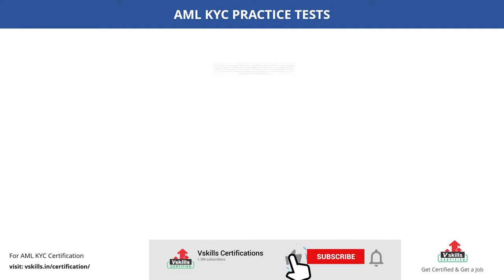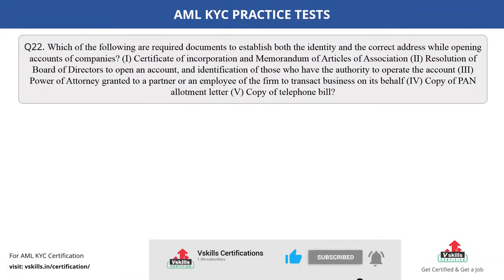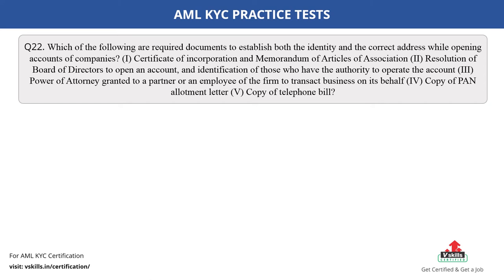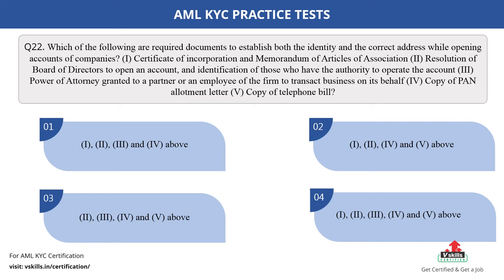Question number 22. Which of the following are required documents to establish both the identity and the correct address while opening accounts of companies? 1. Certificate of incorporation and memorandum of articles of association; 2. Resolution of board of directors to open an account and identification of those who have the authority to operate the account; 3. Power of attorney granted to a partner or an employee of the firm to transact business on its behalf; 4. Copy of PAN allotment letter; 5. Copy of telephone bill. The options are: A. 1, 2, 3 and 4 above; B. 1, 2, 4 and 5 above; C. 2, 3, 4 and 5 above; D. 1, 2, 3, 4 and 5 above. The correct answer is option D.